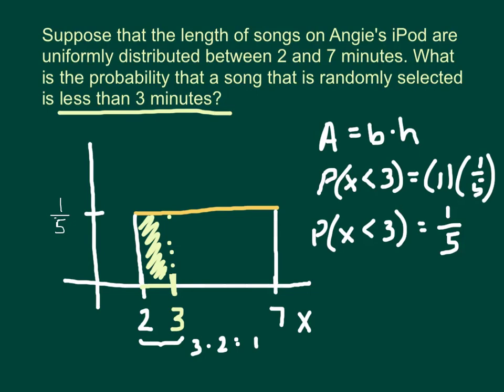So remember in any uniform distribution, the first thing you need to do is find that height knowing that the total area of the rectangle is one. And then you find your actual range of values that you're looking for and calculate the area that corresponds to that.